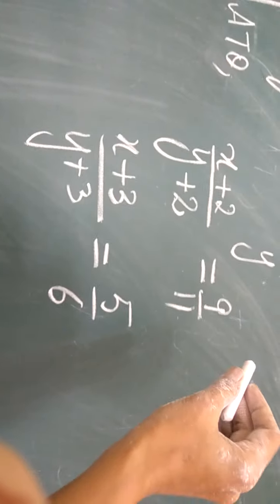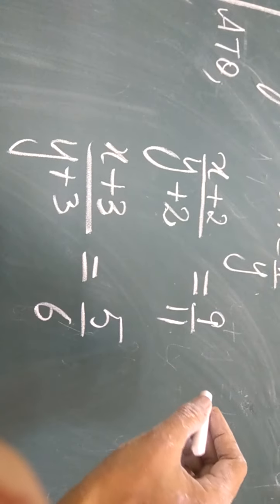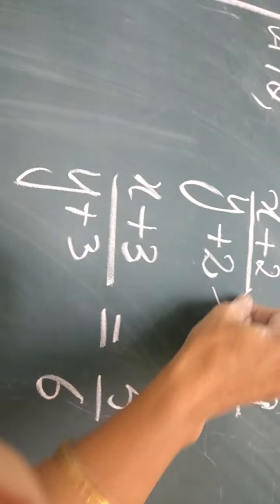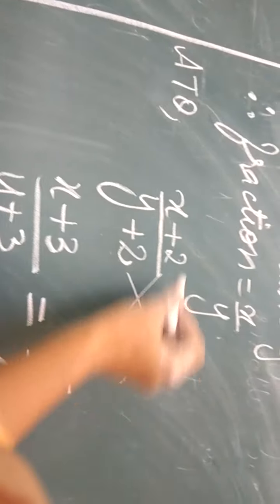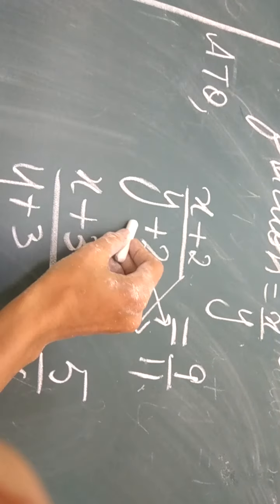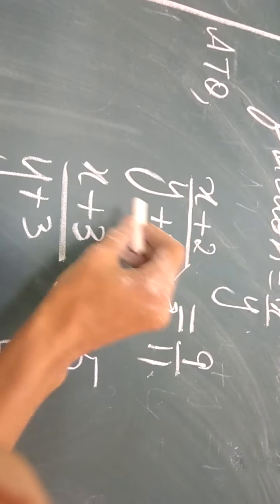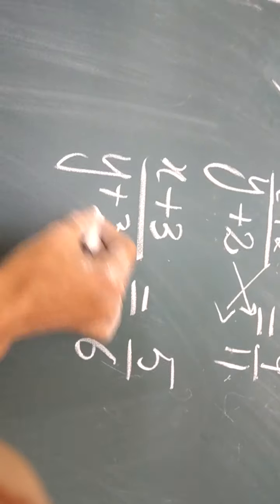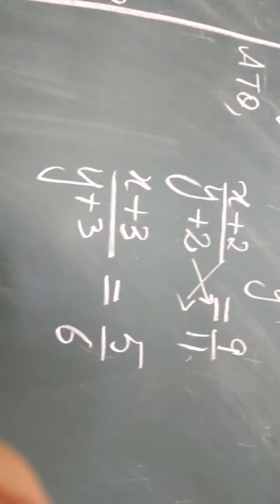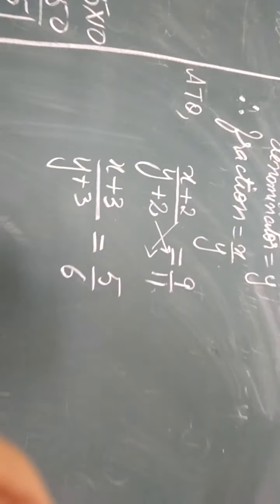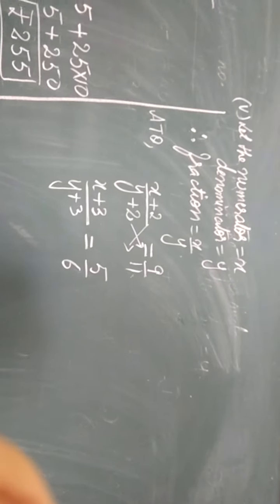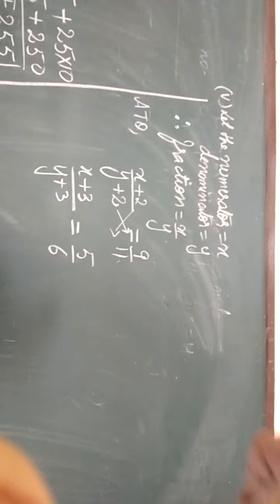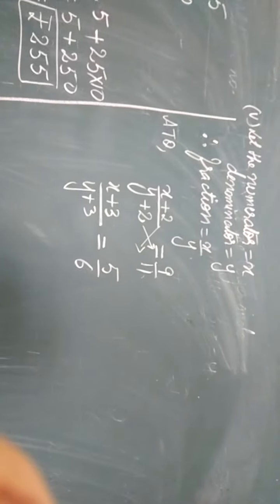You have learnt how to convert them into linear form in your 8th class. Just cross multiply them: 11 multiplied by (x plus 2) is equal to 9 multiplied by (y plus 2). Then convert it into an X, Y equation. Similarly, by cross multiplying the second condition, get the two equations and then solve them by substitution method. At the end you will get the value of X and Y, and the fraction becomes X by Y.